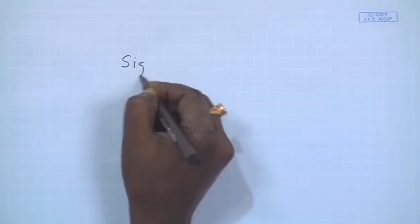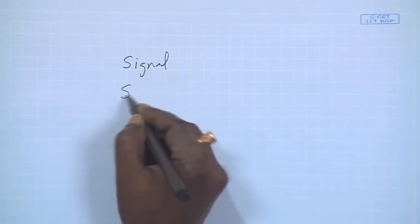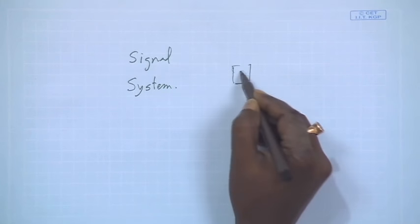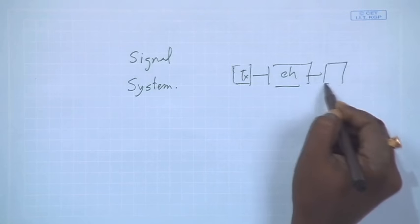So far we have discussed basic communication, and the course name is analog communication, so we will be slowly going into analog communication. We have discussed the modules of communication: the transmitter side, receiver side, and how they communicate to each other. Today we will see what a particular communication system requires — it generally requires two things: signal and system.